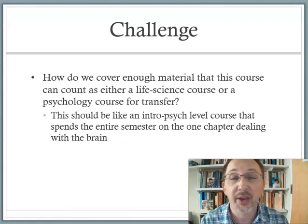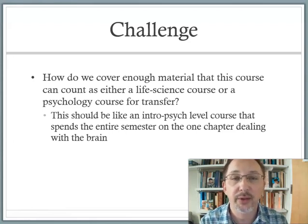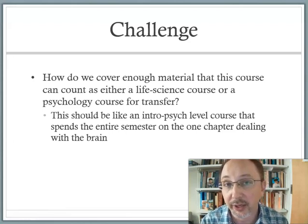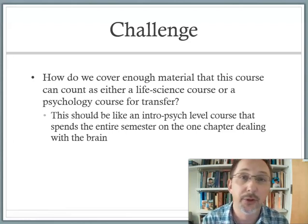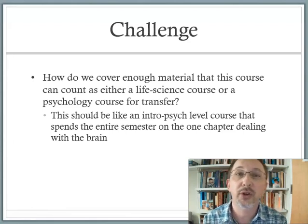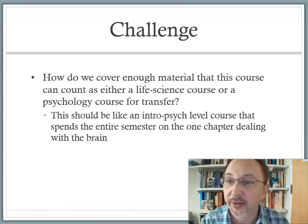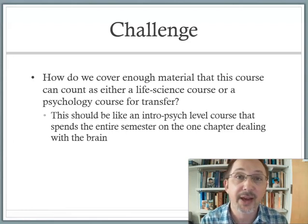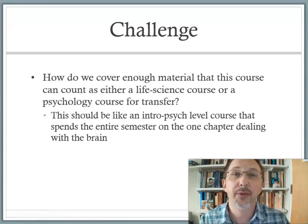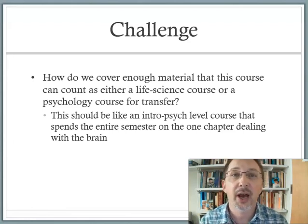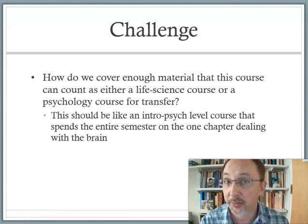This class covers and can count for both a psychology credit and a biology credit in terms of transfer to the UC system, which means you choose which one it is. I don't think it can count for both, but you get to decide. That means there's a lot of stuff to cover — how do we maintain both the life science aspect and the psychology aspect? That also means there's going to be a lot of material.